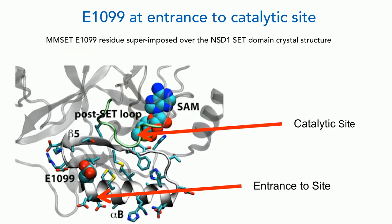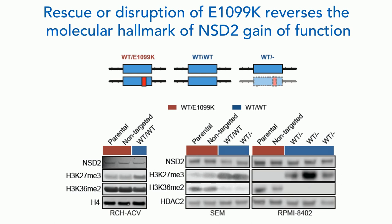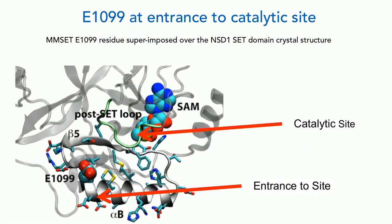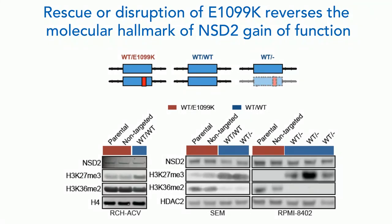We looked at the global chromatin profile of these cells. Despite MM-SET not being dramatically overexpressed, we still see K36 dimethylation increase and K27 trimethylation decrease — the same switch we saw with overexpression, but now caused by a single amino acid mutation. This mutation is not in the catalytic site but at the entrance of the enzyme where the histone tail fits in. By molecular dynamic simulation, we believe it creates a larger surface area for histone tail binding, creating a more stable interaction. Using allele-specific CRISPR, we converted the mutant to wild type or ablated the mutant allele and confirmed that the point mutation causes the chromatin abnormality.